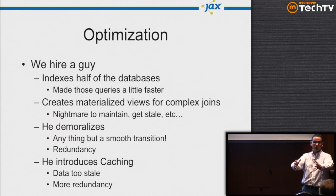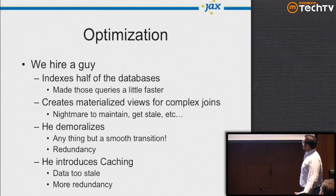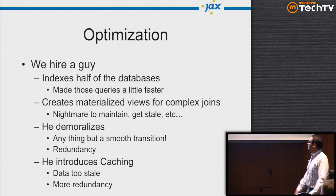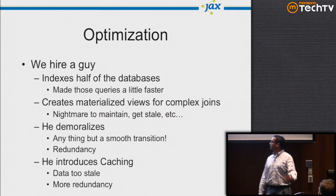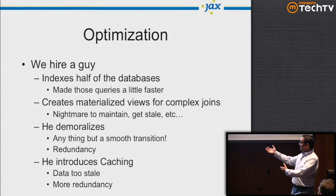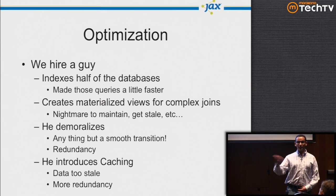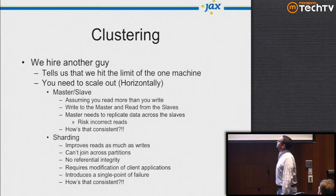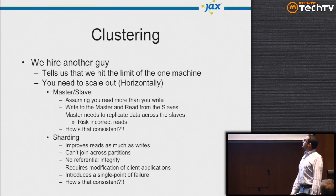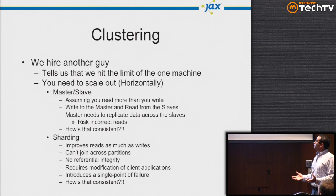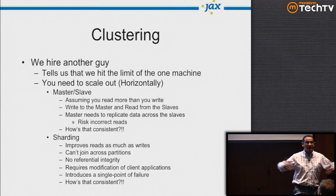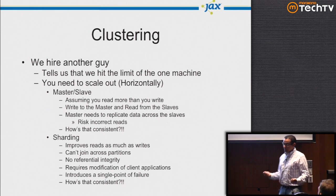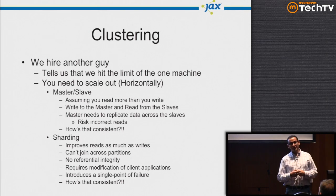He'd say we need to denormalize — we just couldn't join four tables with all that data and get good performance. We ended up with the redundancy we didn't want and had to manage it. Then he'd introduce caching, but the data was too stale, we had even more redundancy, and we needed to worry about cache eviction. It was a mess. Then another 'smarter' guy tells us we've hit the limit of one machine and need to scale out horizontally — have a cluster of machines instead.